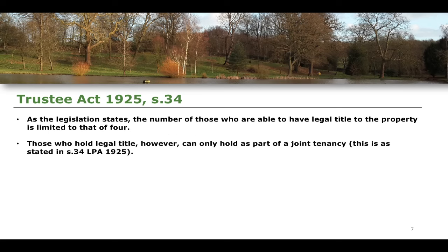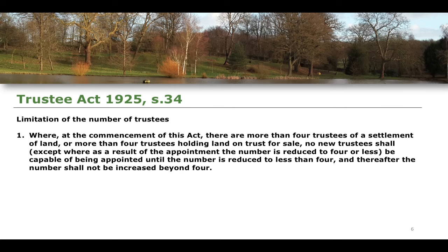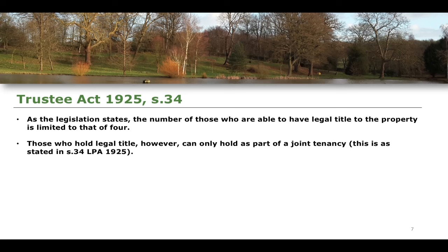This means that those who hold legal title can only ever hold that legal title as part of a joint tenancy. This is what is cited in section 34 of the Trustee Act 1925. Essentially, a joint tenancy is limited to four people — you can only have a joint tenancy of four individuals, given that you can only have four legal owners and four legal trustees as per section 34. In addition, you can only ever hold legal title as part of a joint tenancy, as stated in the same legislation.